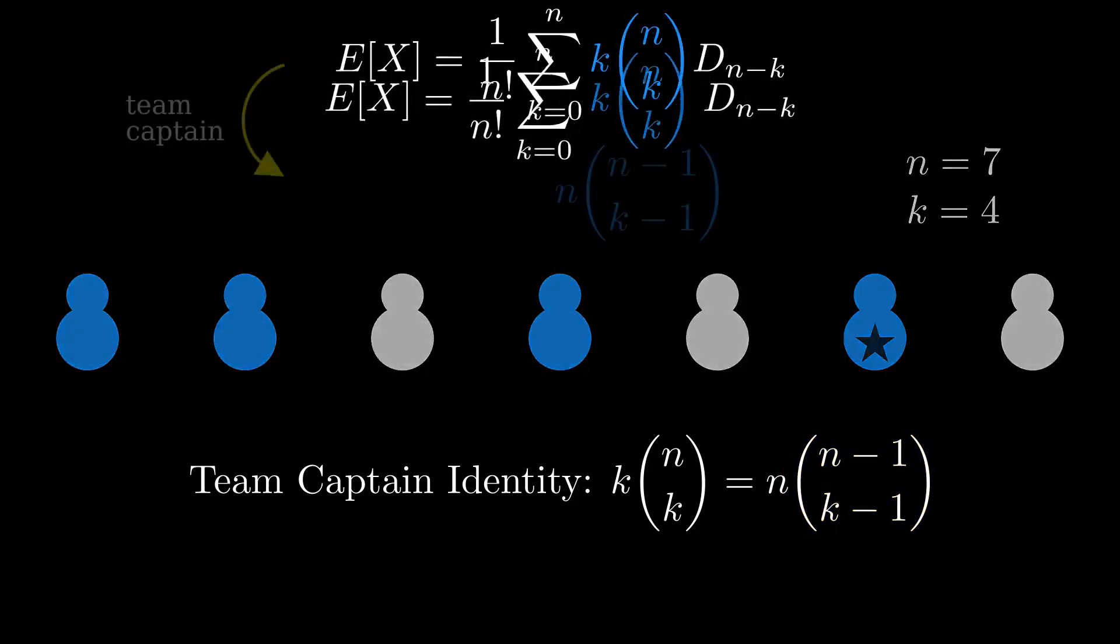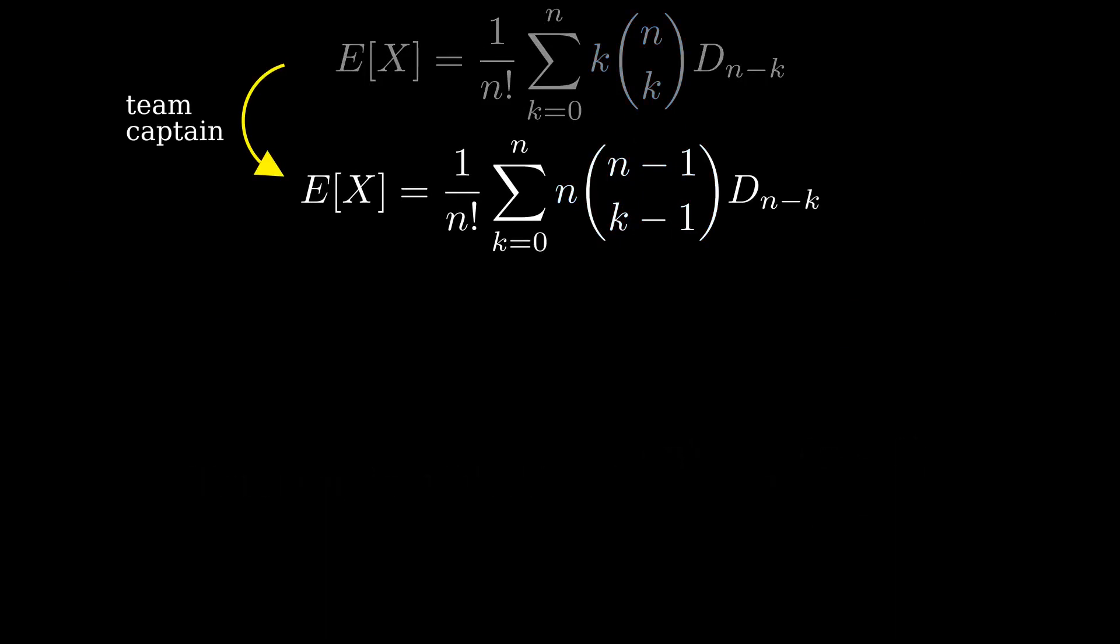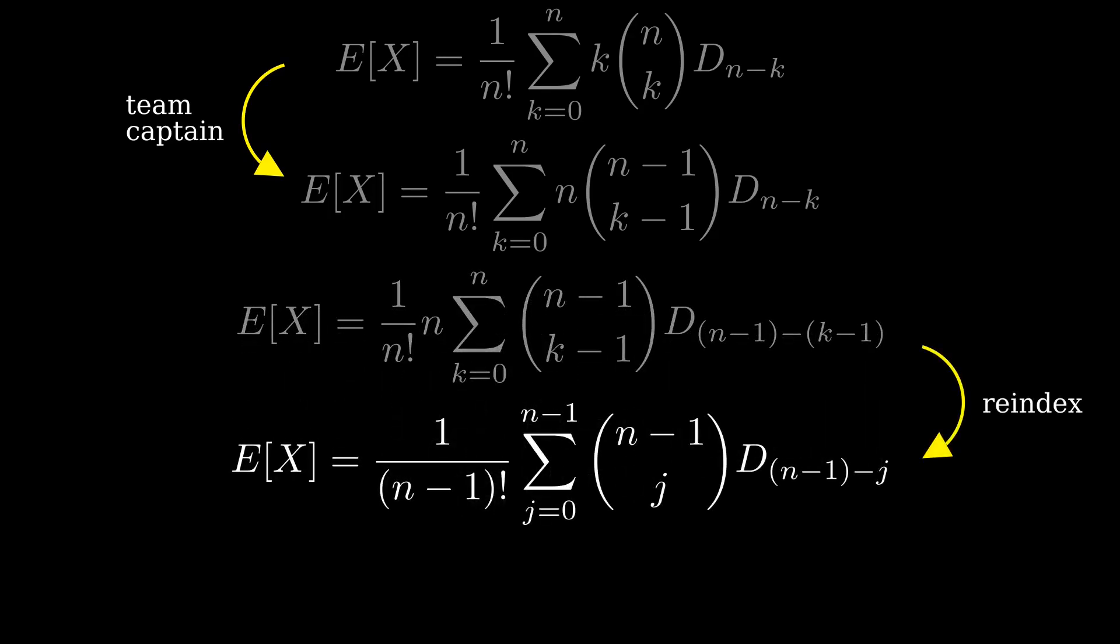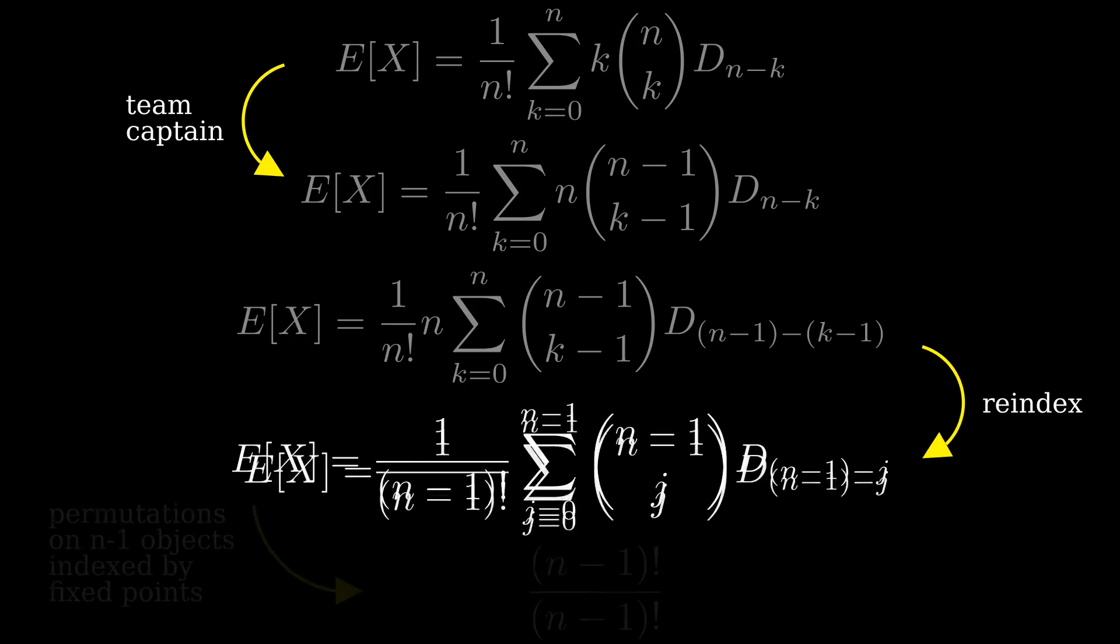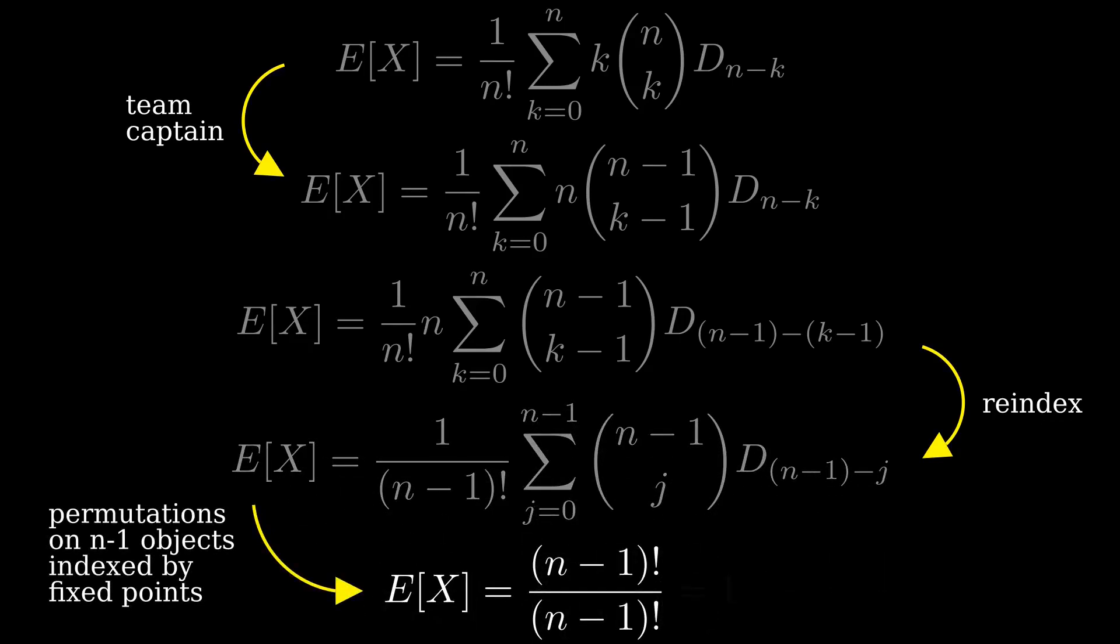So if we apply the team captain identity to our calculation, and employ some Mathologer-style auto-algebra and re-indexing, we can appeal to work already done, breaking apart permutations of n minus 1 things into groups where j things are fixed at a time. And good! We get 1 from this expected value computation.